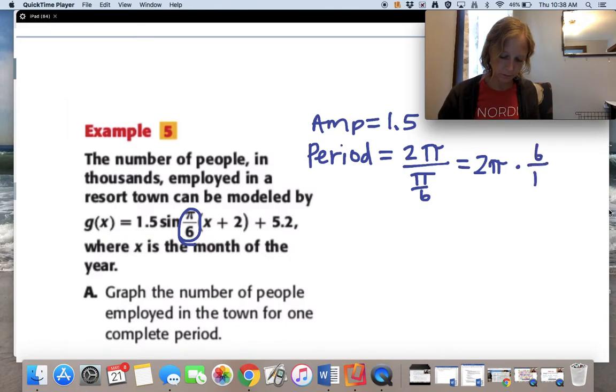So 6 over π. Put a 1 over that. Pies cancel. Period equals 12.